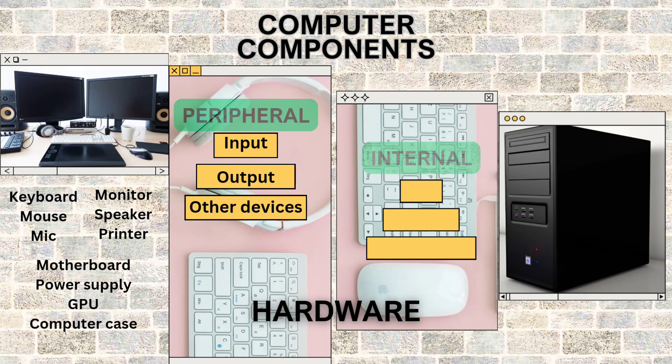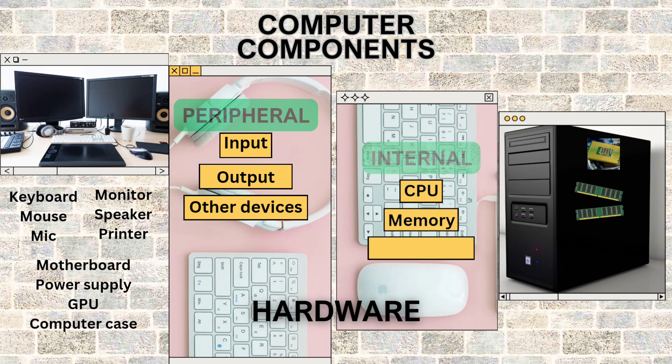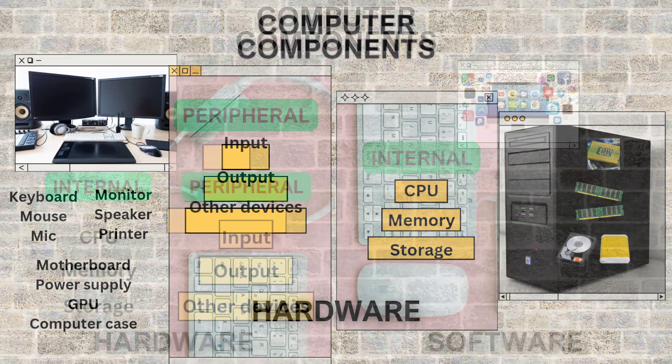Inside you find the central processing unit — the brain — random access memory for storing data during processing, and storage devices for permanently saving information.